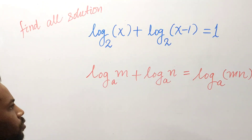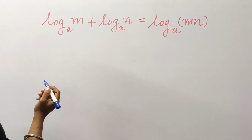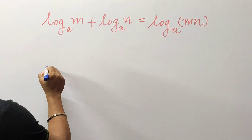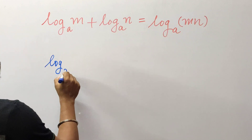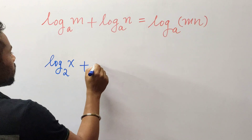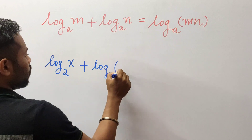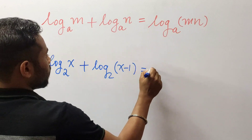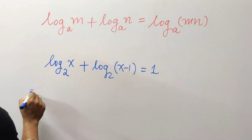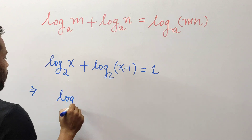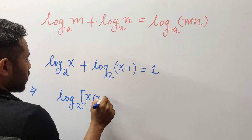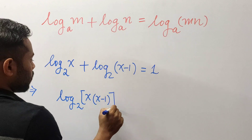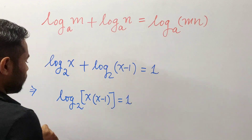We will use this basic rule to write: log₂(x) plus log₂(x minus 1) equals 1. Hence, this becomes log₂(x into x minus 1) equals 1.